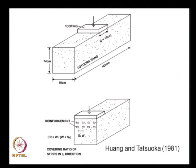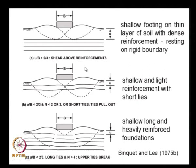This picture is from Huang and Tatsuoka, used because it more easily explains the cross section considered by Binquet and Lee. Based on their results, they classified bearing capacity failures into three different modes: mode 1, mode 2, and mode 3.